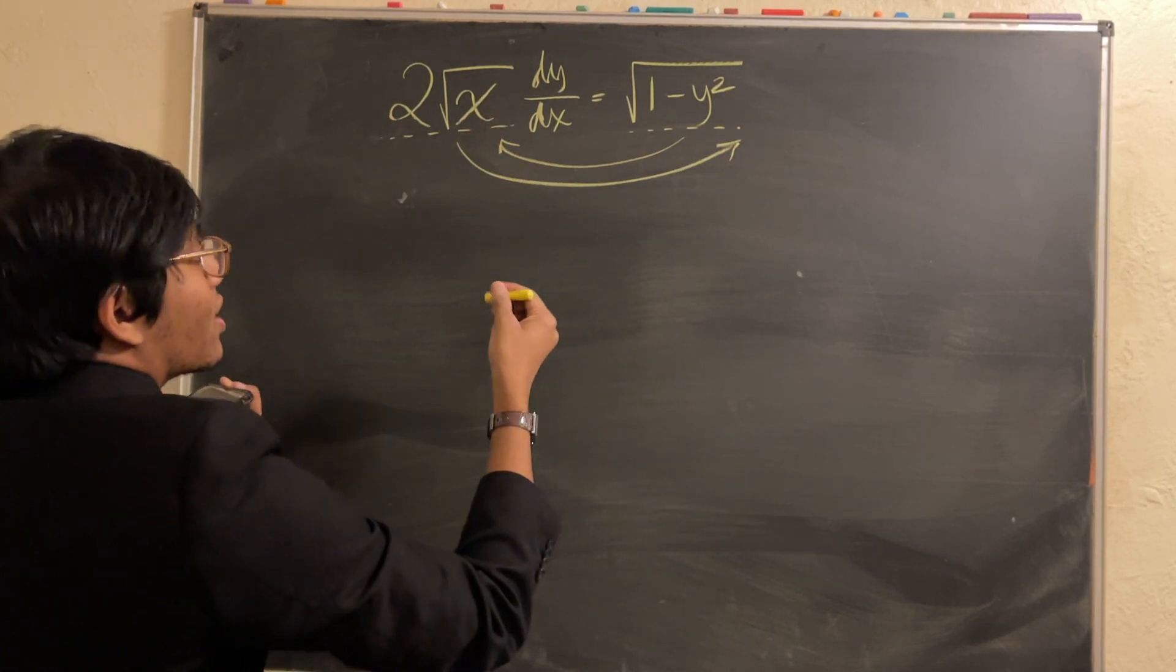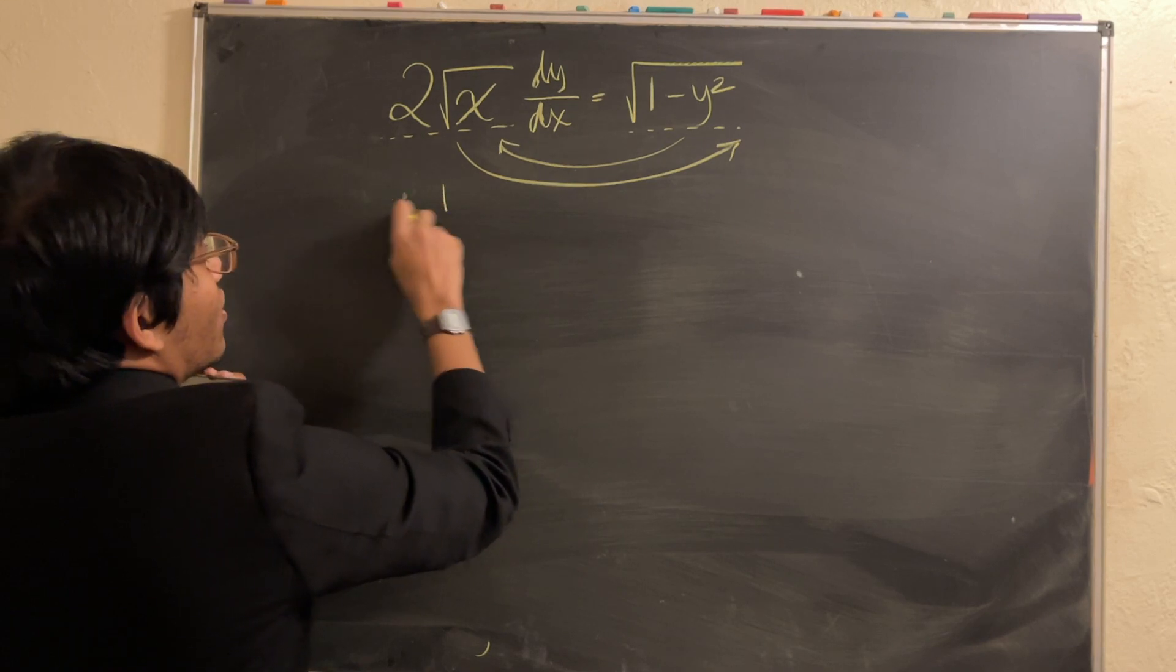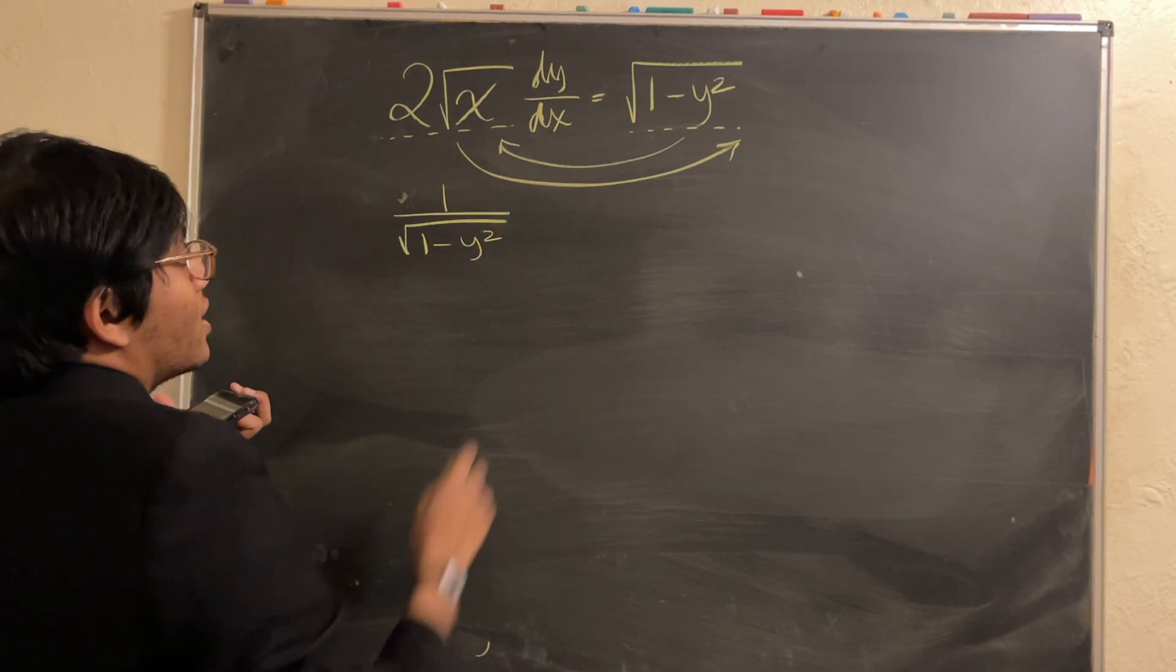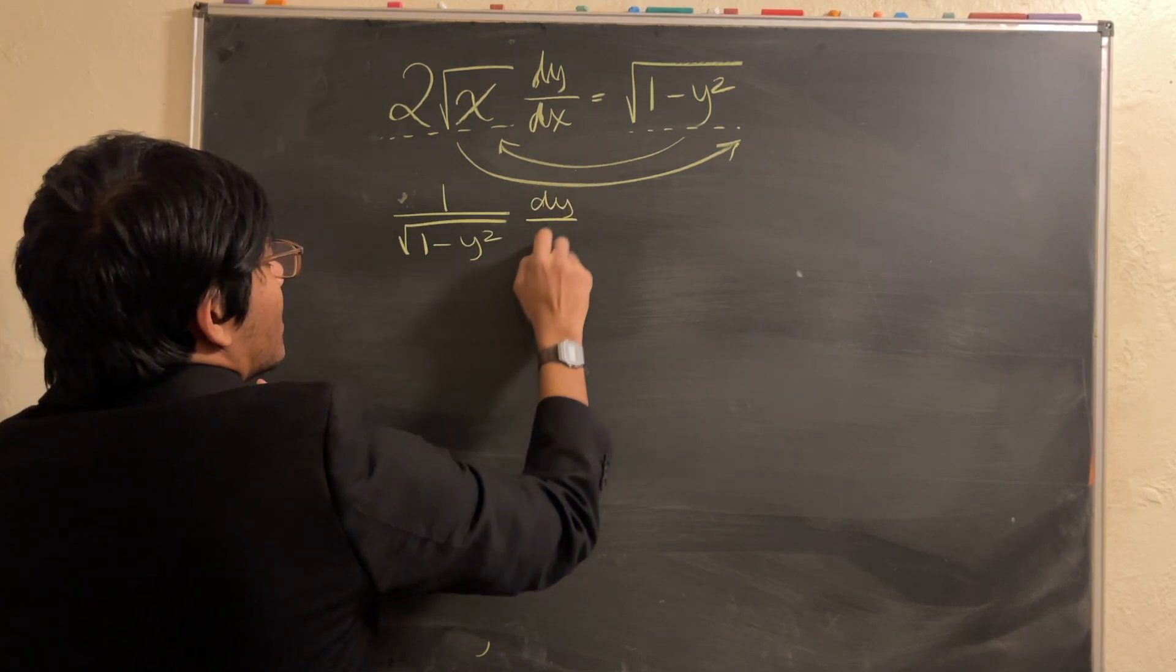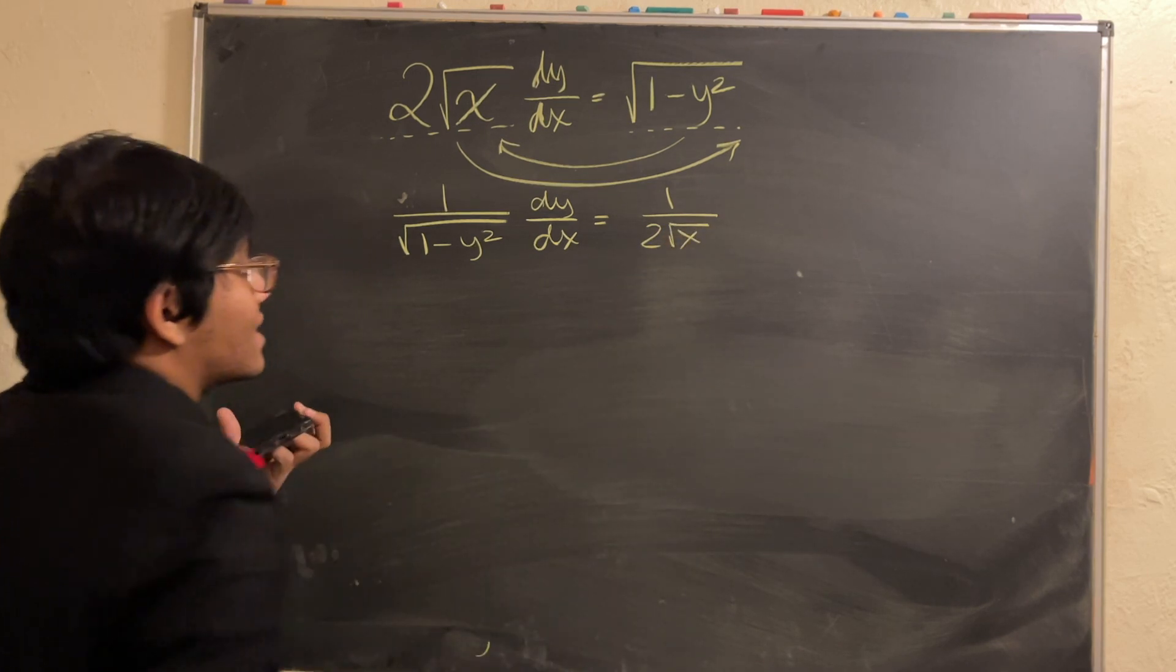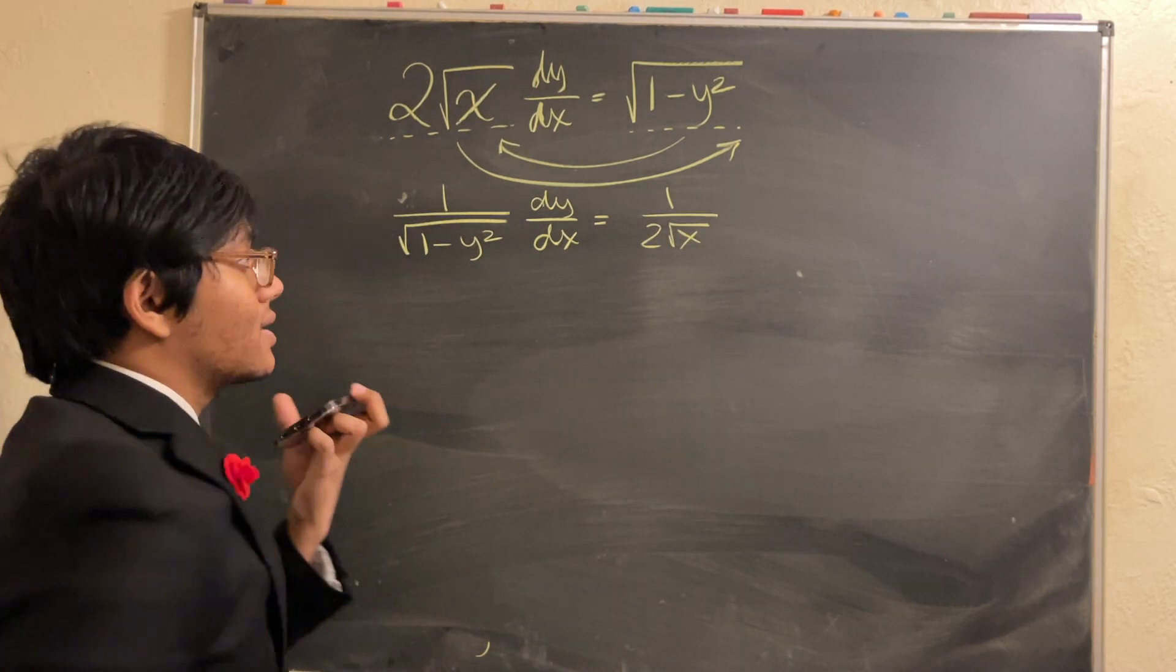And so, if I do that, what am I going to get? I'm going to get 1 over the square root of 1 minus y squared dy dx is equal to 1 over 2 root x. All right, well, how does that help me, you ask?